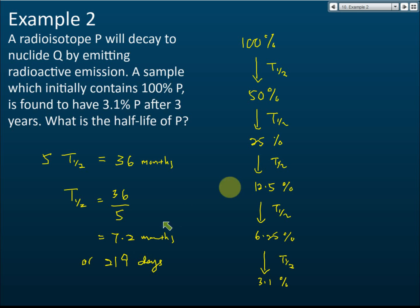So you see, initially 100%, after first half-life 50%, another half-life 25%, another half-life 12.5%, another half-life 6.25%, another half-life about 3.1%. So it takes 5 half-lives to decay from 100% to 3.1%.